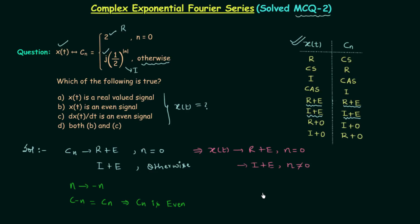Now we will select the correct option from the four given options. Option A says XT is a real valued signal. This is true when n equals 0, but when n is not equal to 0, XT is imaginary. So option A is incorrect. Option B says XT is an even signal. You can see that whether n equals 0 or not, XT is always even.